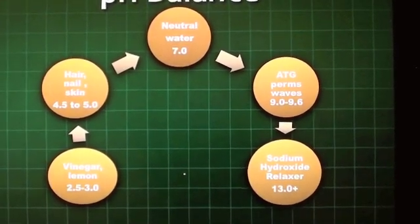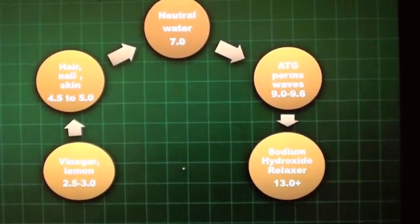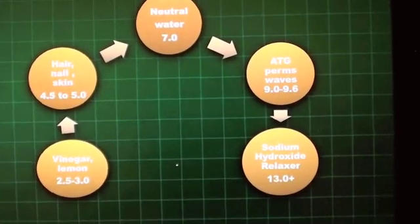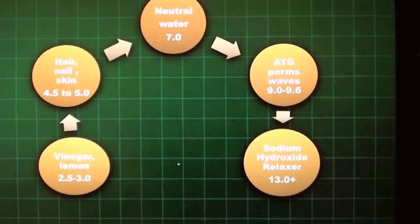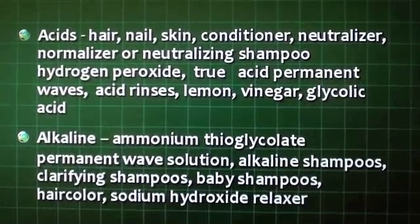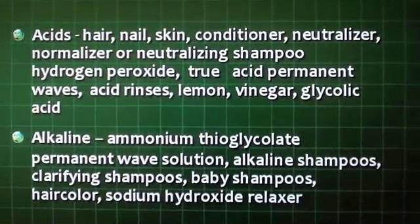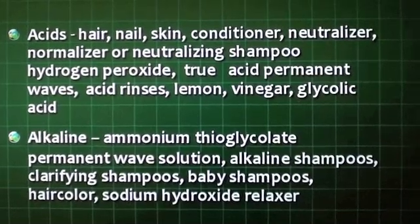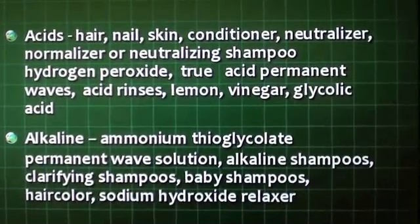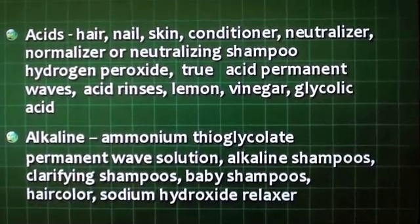Vinegar and lemon are 2.5 to 3.0. Ammonium thioglycolate perm waves are 9.0 to 9.6. Sodium hydroxide relaxers are 13.0 and above. Examples of acids include hair, nail, skin conditioners; neutralizers; normalizing shampoos; hydrogen peroxide; true acid permanent waves; acid rinses; lemon; vinegar; and glycolic acids.